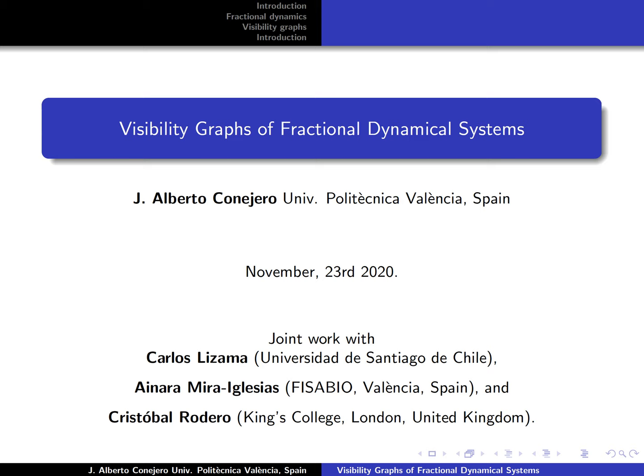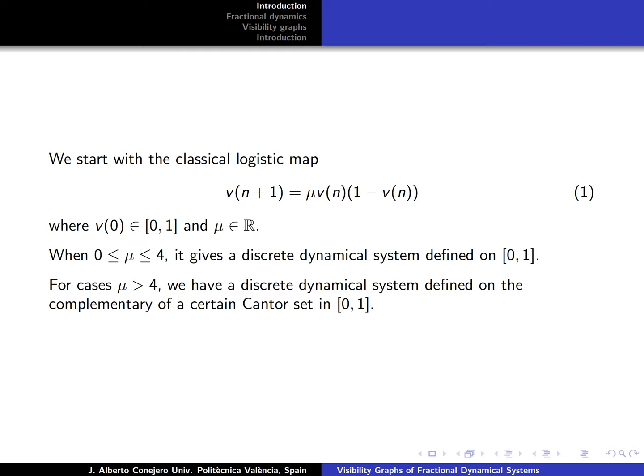The starting point of our work is the logistic map that we have in equation 1, with initial condition in the unit interval and a parameter μ. It's well known that if μ is between 0 and 4, we have a discrete dynamical system on the interval, but for cases with μ greater than 4, we have a discrete dynamical system defined only in the complementary of a Cantor set in the unit interval.